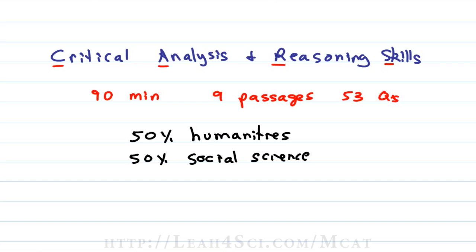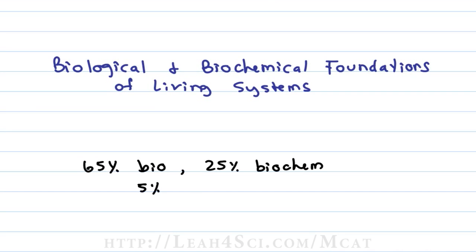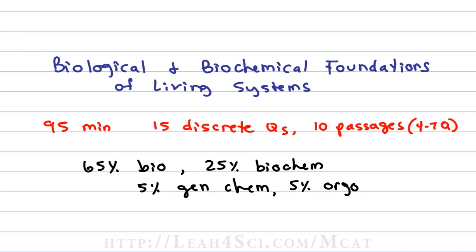The third section is the Biological and Biochemical Foundations of Living Systems, covering 65% biology, 25% biochemistry, 5% general chemistry, and 5% organic chemistry. As with the first science section, you'll have 95 minutes to work through 15 discrete questions and 10 passages with 4 to 7 questions each.